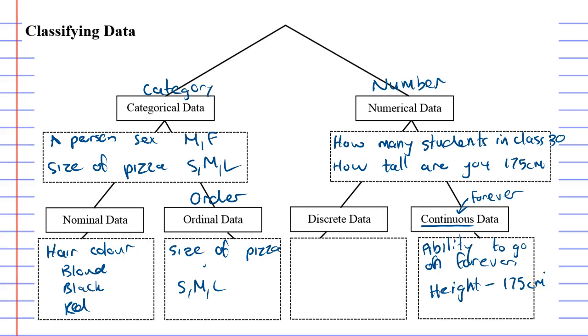But it all depends on the accuracy of your measuring instrument. Something that was more accurate might measure them as 175.1 centimeters or even more accurate again 175.12039 centimeters. A person's height has the potential to go on forever. So any number that has the potential to go on forever is considered continuous data.